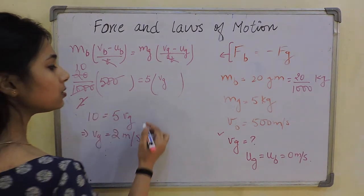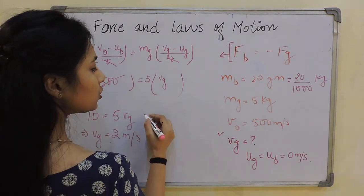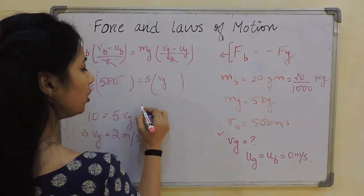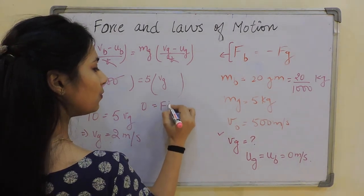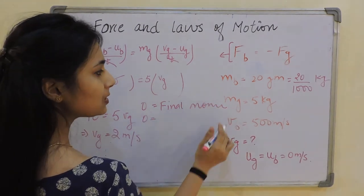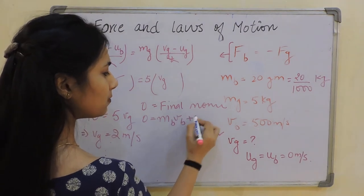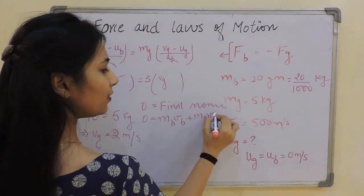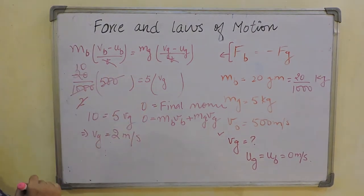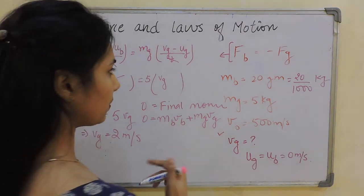The second method is using conservation of momentum directly: initial momentum equals final momentum. Since both are initially at rest, initial momentum = 0. So 0 = MB × VB + MG × VG, which leads to the same answer.